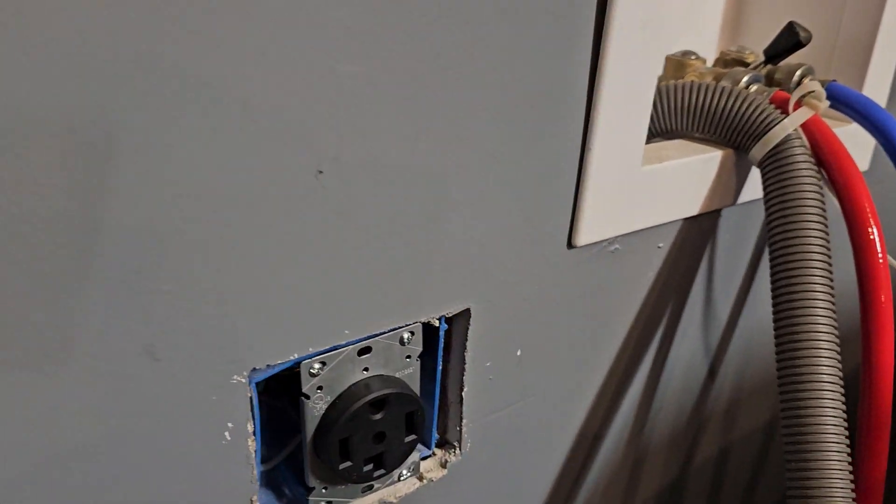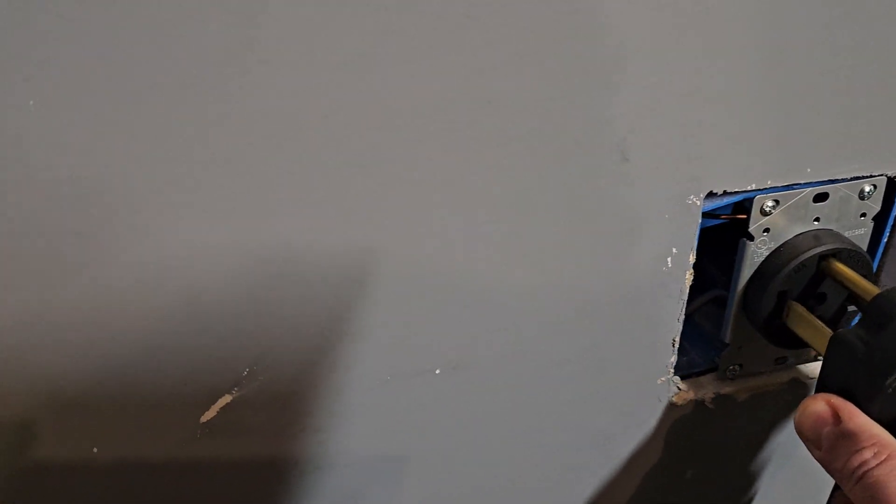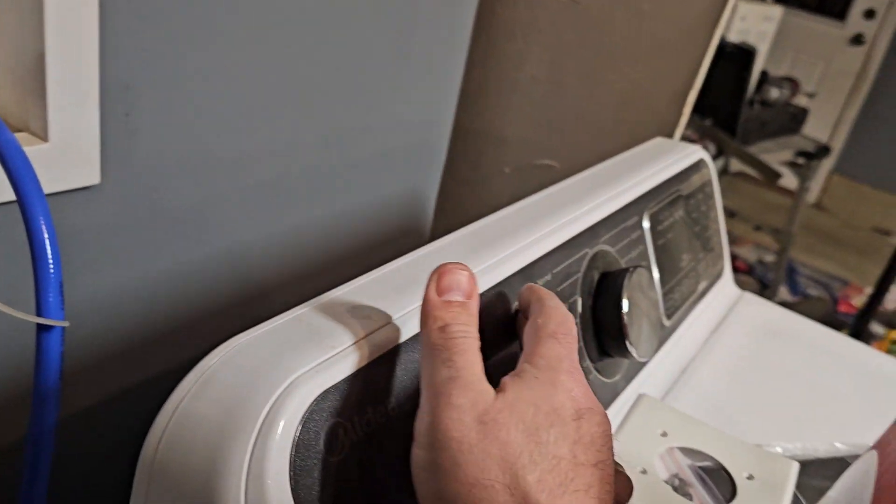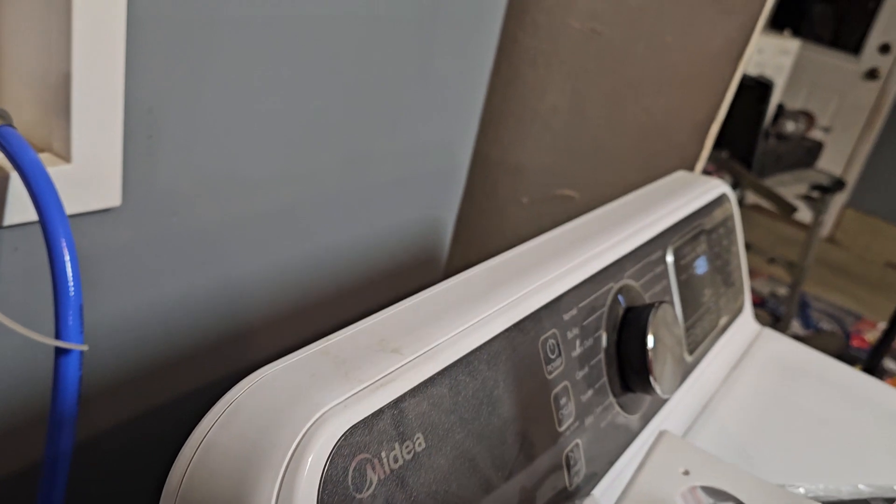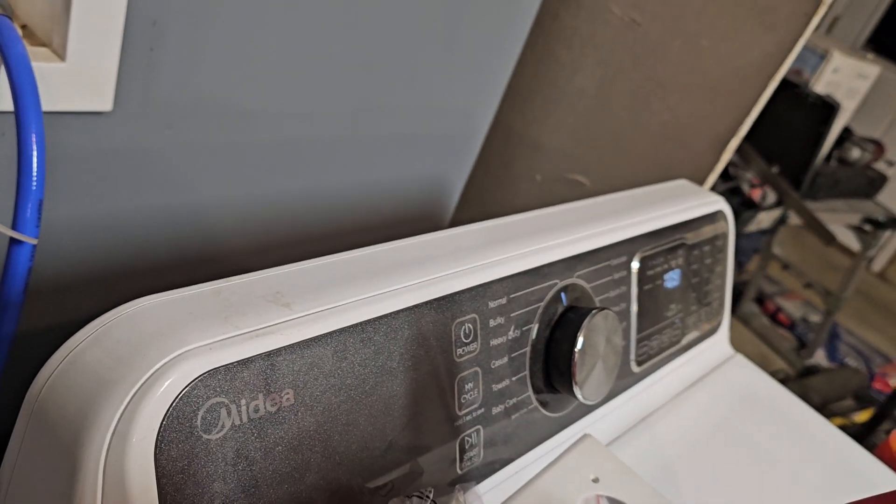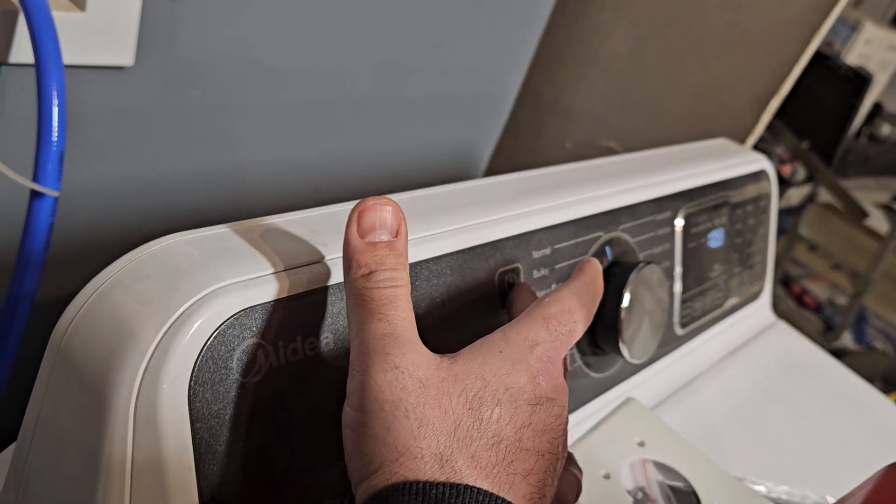And now we're going to test it with the dryer. So we're going to plug it in. Let's see if this thing comes on. And look, we have power. Perfect. So we're going to turn this off, we're going to flip the switch back off on the fuse box, we're going to cover it back on and we'll be all set.